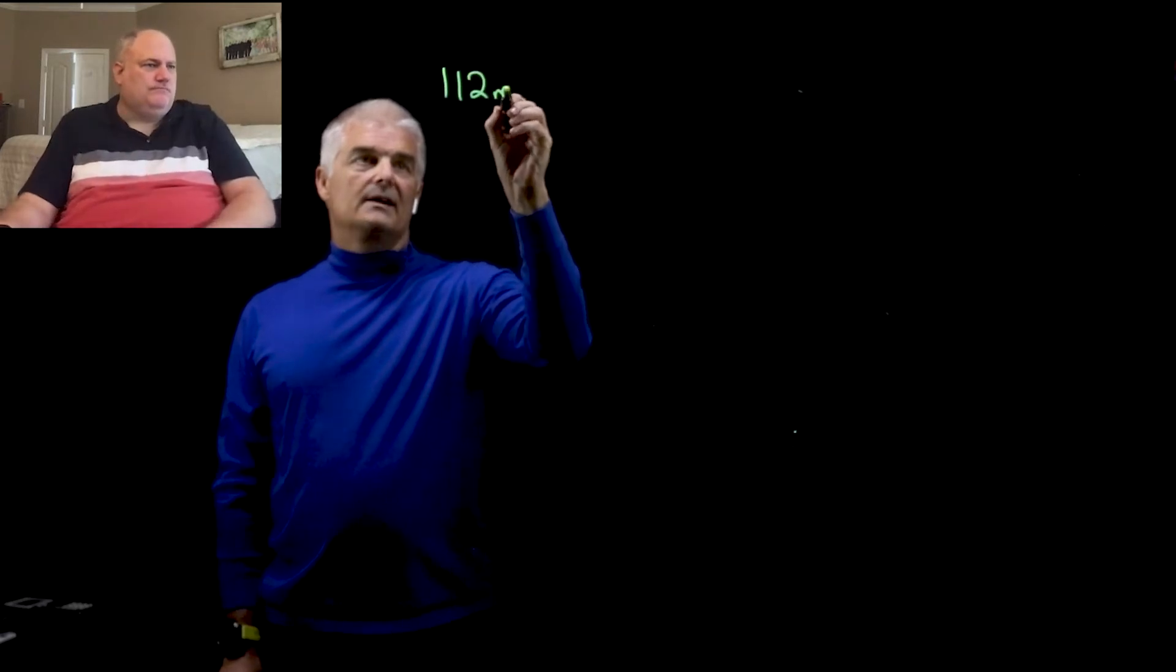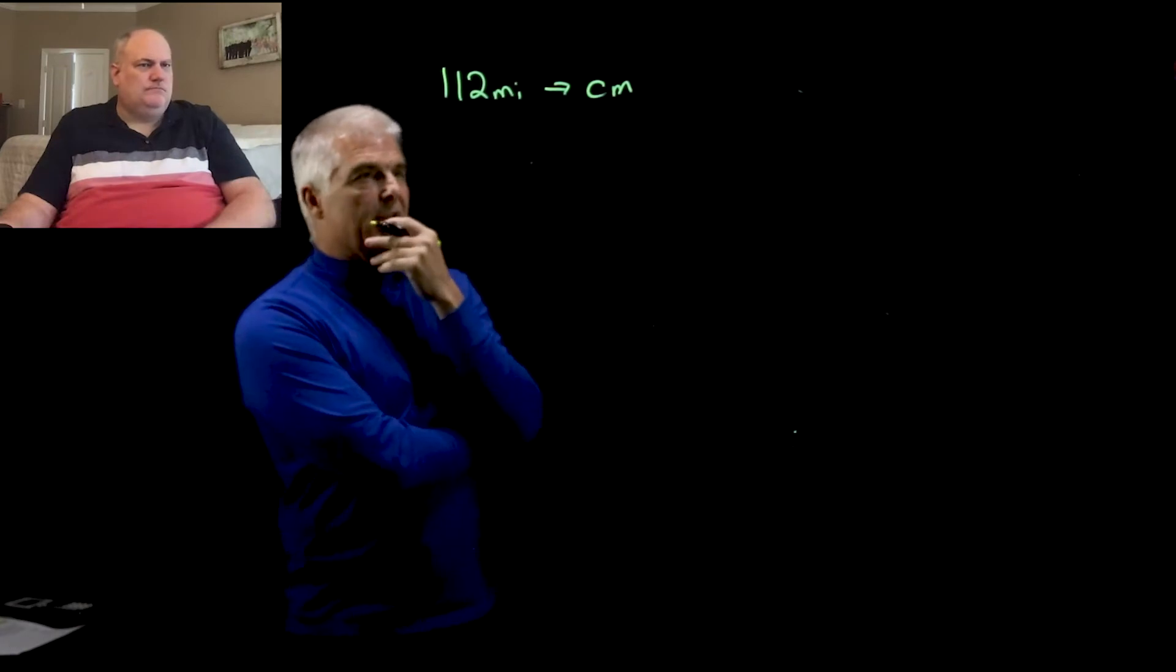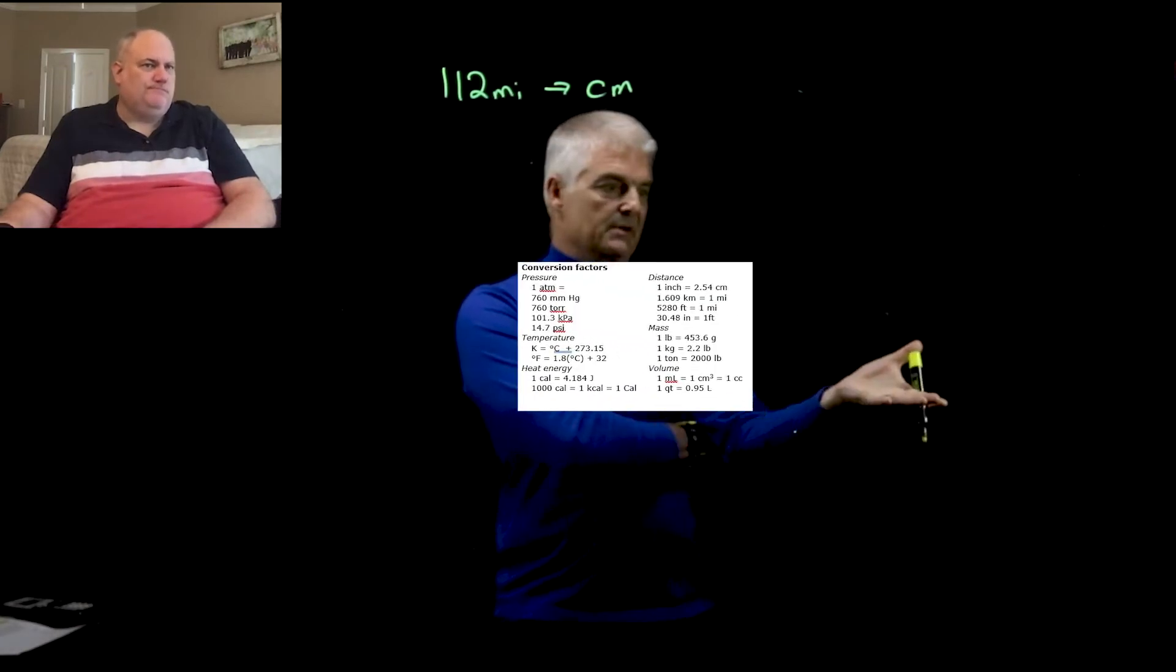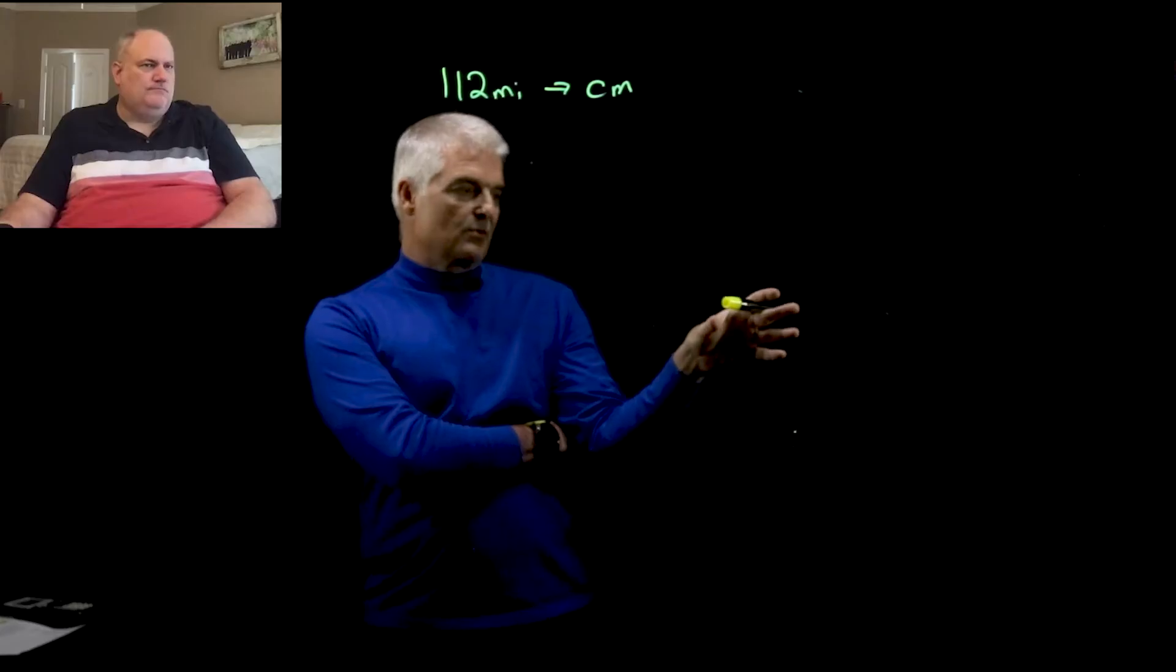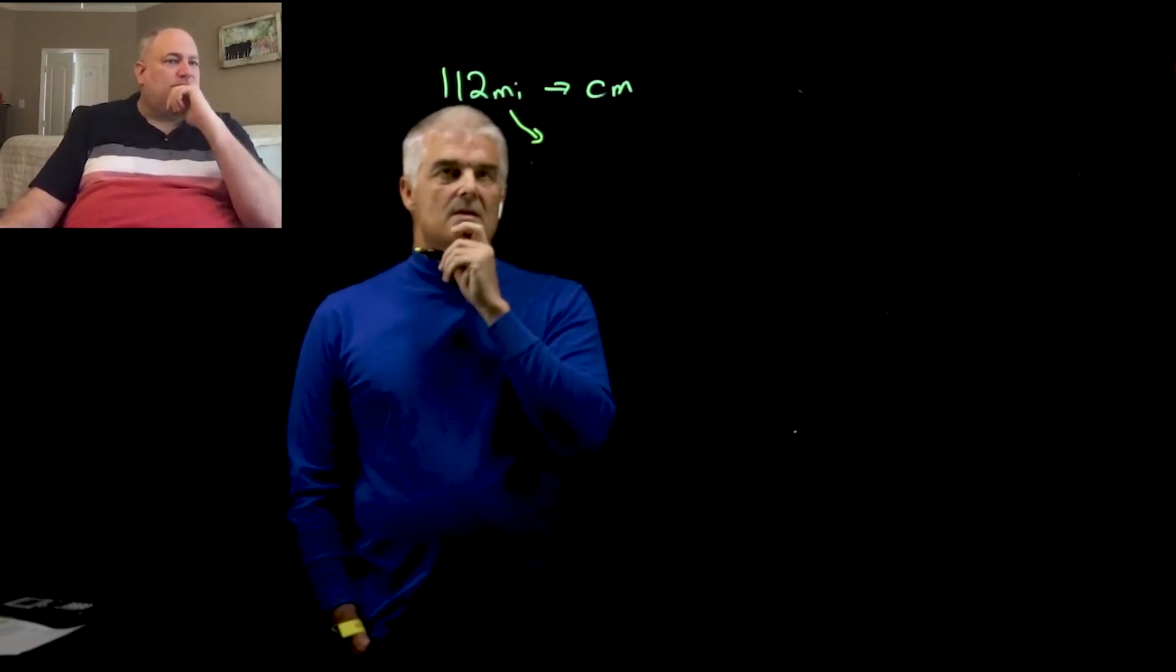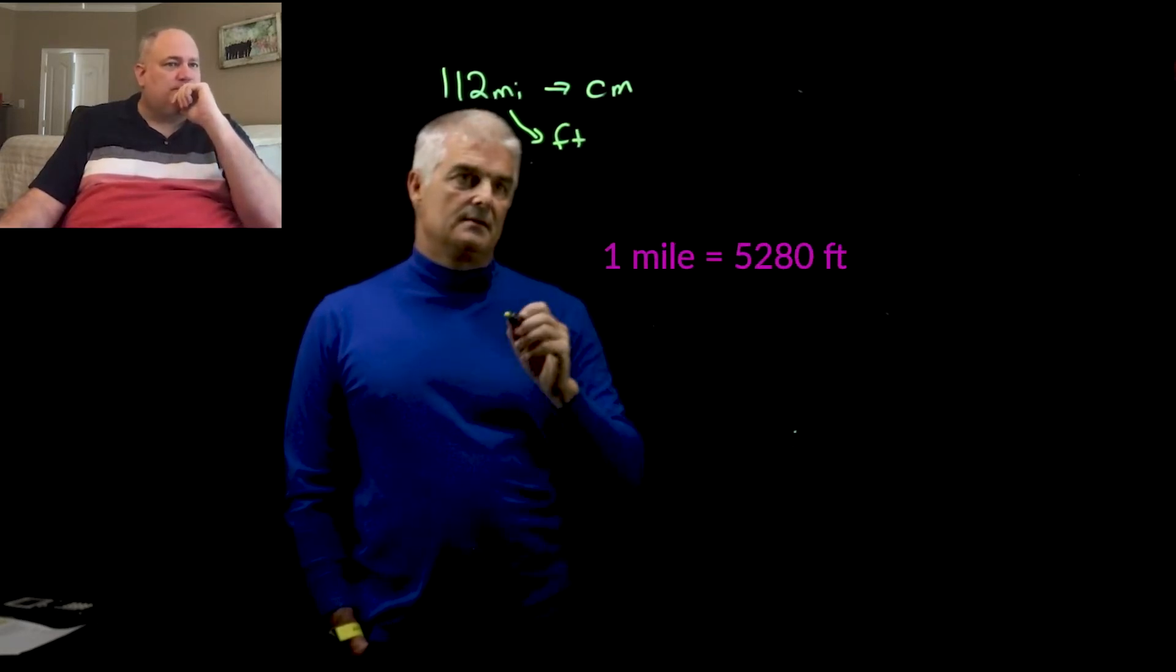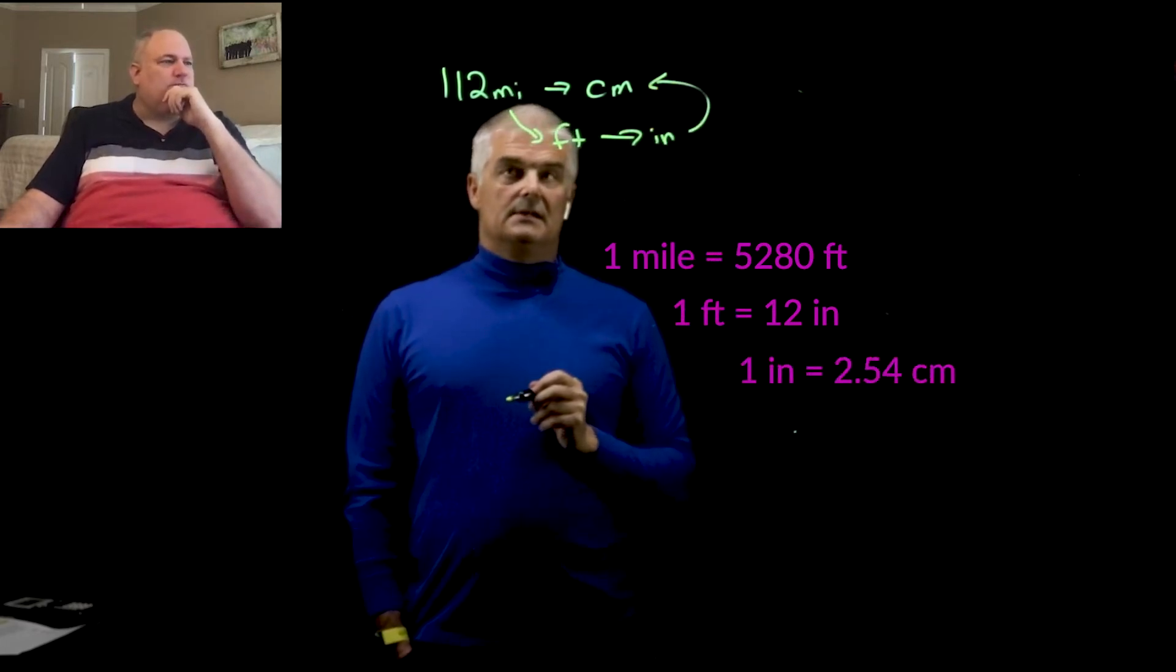The next one we want to do is we're going to do 112 miles into centimeters. Now, this is a little bit more complex because if you look at the conversion table, there's no miles to centimeters conversion. So we need to kind of plan this out. So given what we have on this table, what can we do, Mr. Demetrius? For miles, what can I go from miles to? Well, we can go from miles to feet. Let's go to feet. And then feet to inches, perhaps? Feet to inches, and then inches to centimeter. Yeah. So you have to do it in multiple steps.